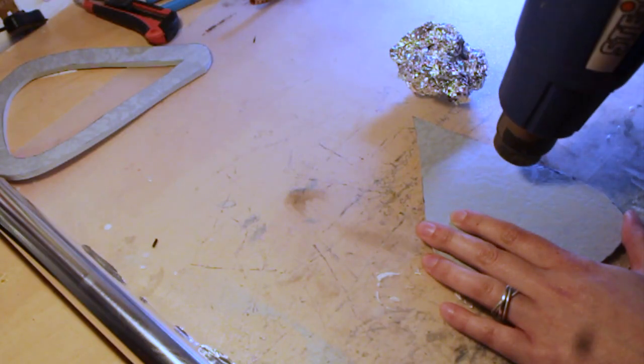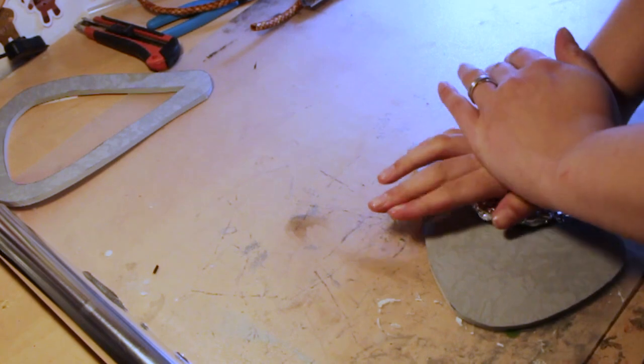To get an even more uneven leather-like structure I rolled up little balls of aluminum foil, heated up the foam piece with a heat gun and pressed it into the material with quite some force.